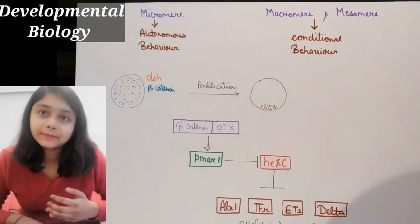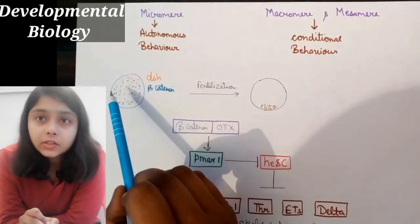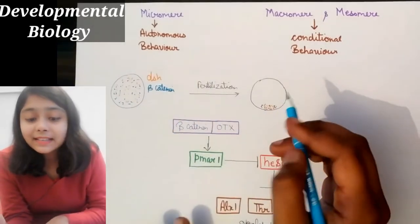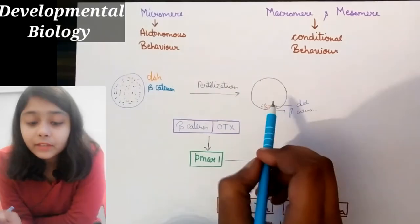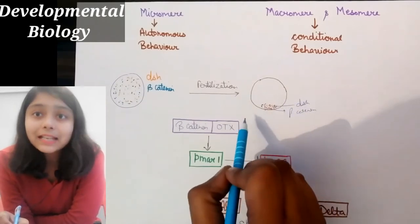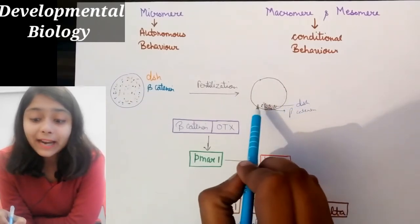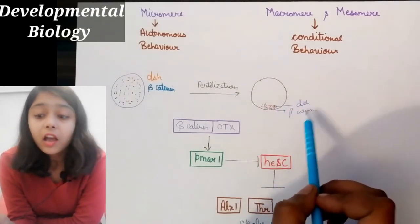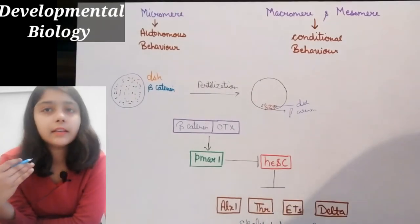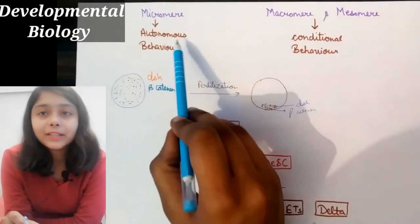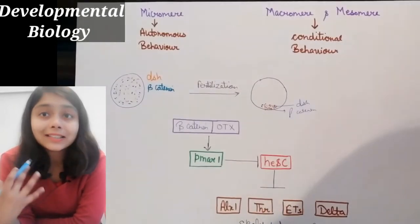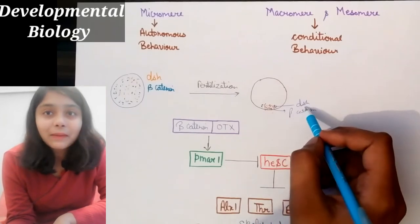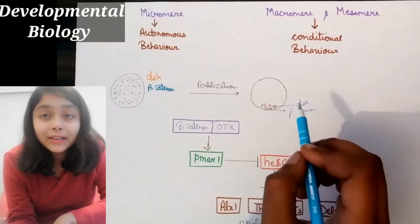Why does micromere follow autonomous behavior? When the sea urchin is an egg, DSH and beta-catenin are uniformly distributed. But after fertilization, DSH and beta-catenin accumulate on the vegetal pole. When they accumulate on the vegetal pole, in the two cell types — micromere and macromere — the quantity of DSH and beta-catenin is greatly increased in micromere.